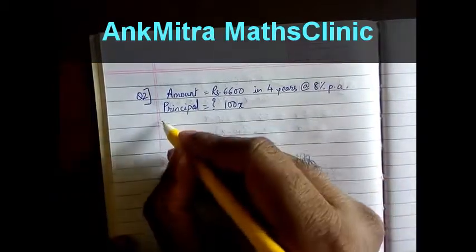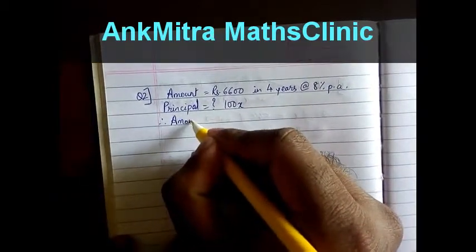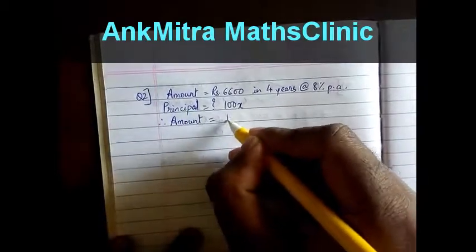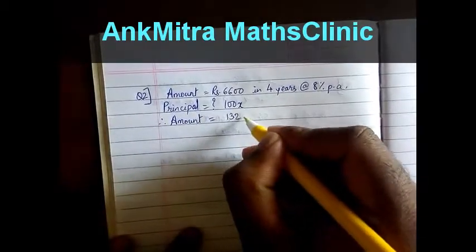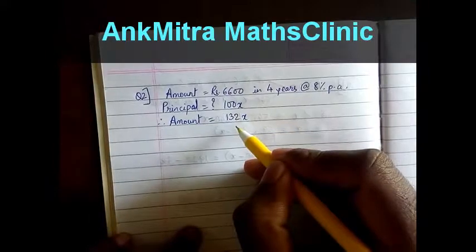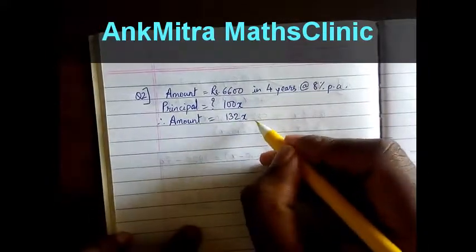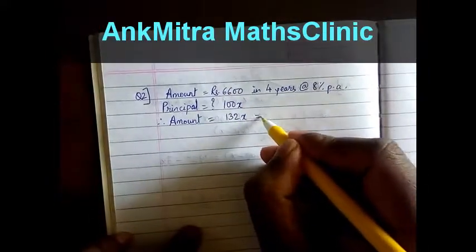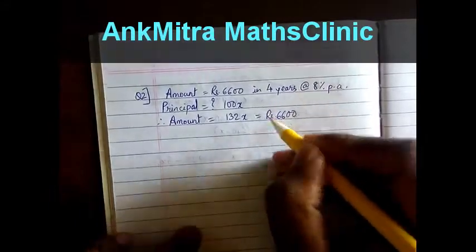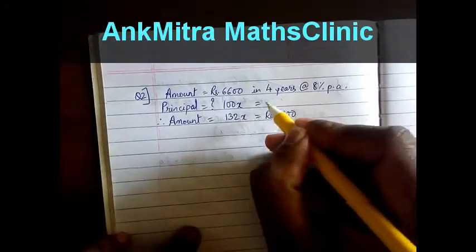So therefore, the amount will be 132x — that is 32% over the principal. This amount of 132x is equal to Rs.6600. So 100x is how much?